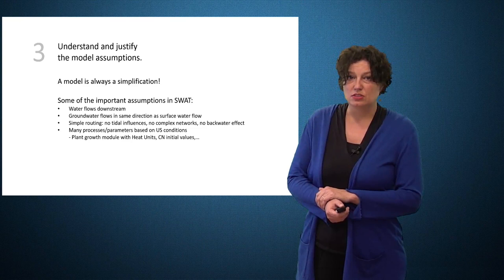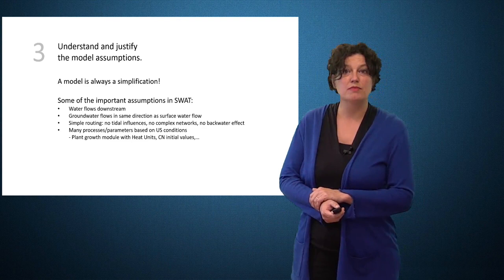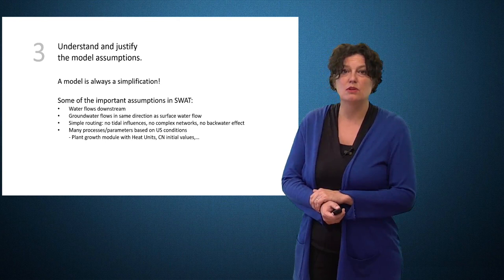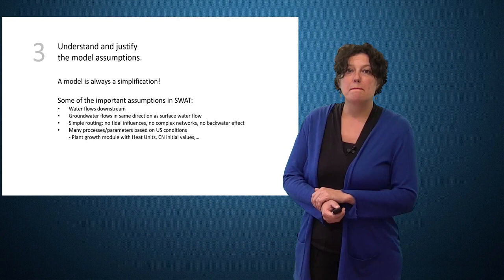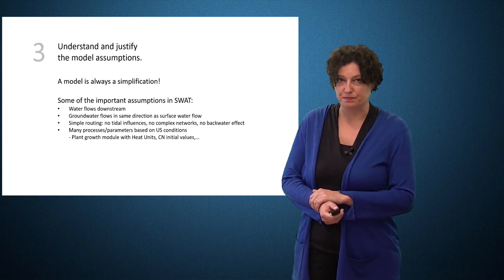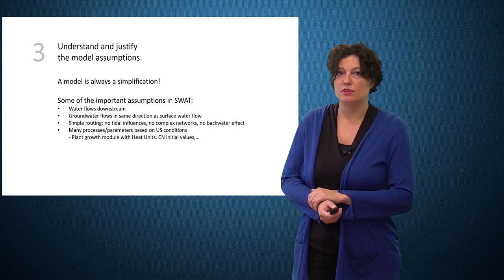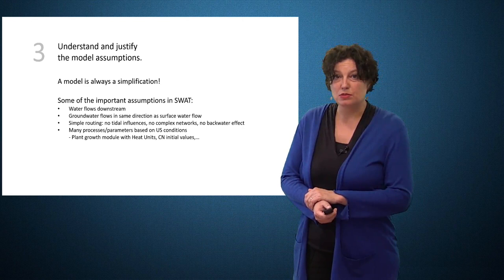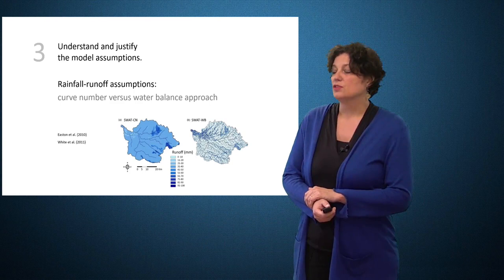The third commandment is to understand and justify the model assumptions. SWAT is built on many assumptions. Some of them are listed below. For instance, the water flows downstream. Groundwater flows in the same direction as the surface water flow. And it also has a relatively simple routing. No tidal influences, no complex networks, no backwater effects. Many processes and parameters are based on US conditions. Also, the plant growth module using the heat units is more suited for the northern hemisphere. Some of these assumptions can be overcome by the SWAT Plus model version, as it offers more flexibility. But it still needs the information, and this information has to be brought in the model. For example, in the SWAT Plus we can divert the groundwater to other catchments.